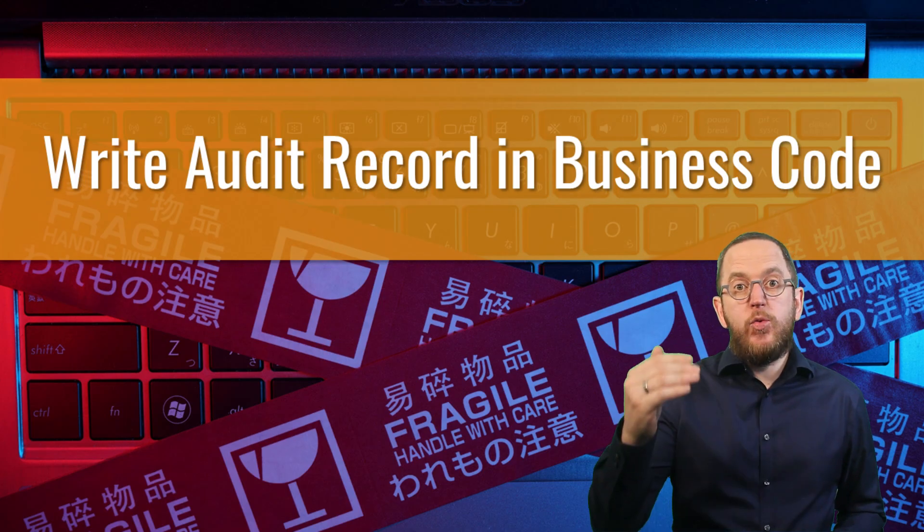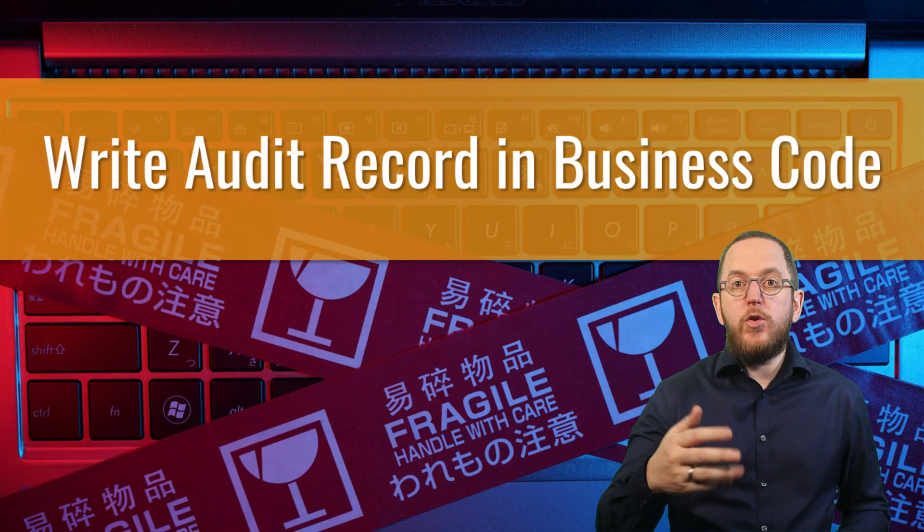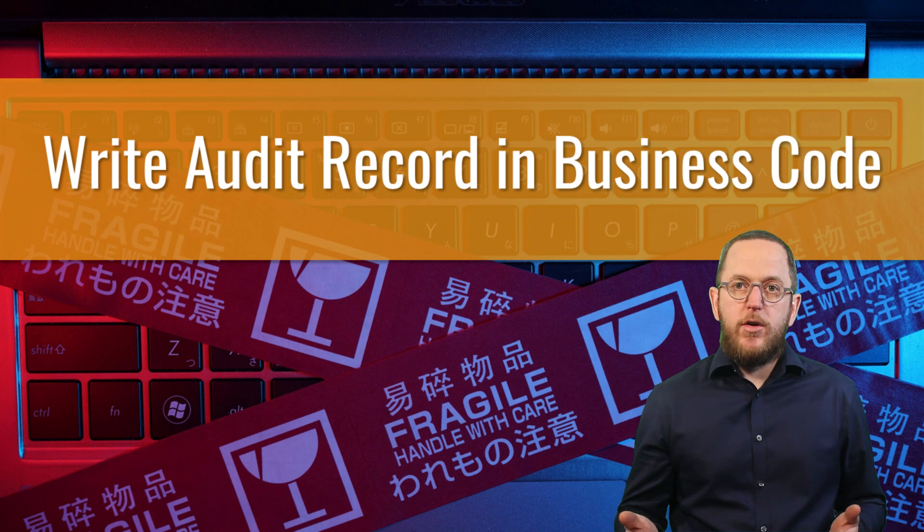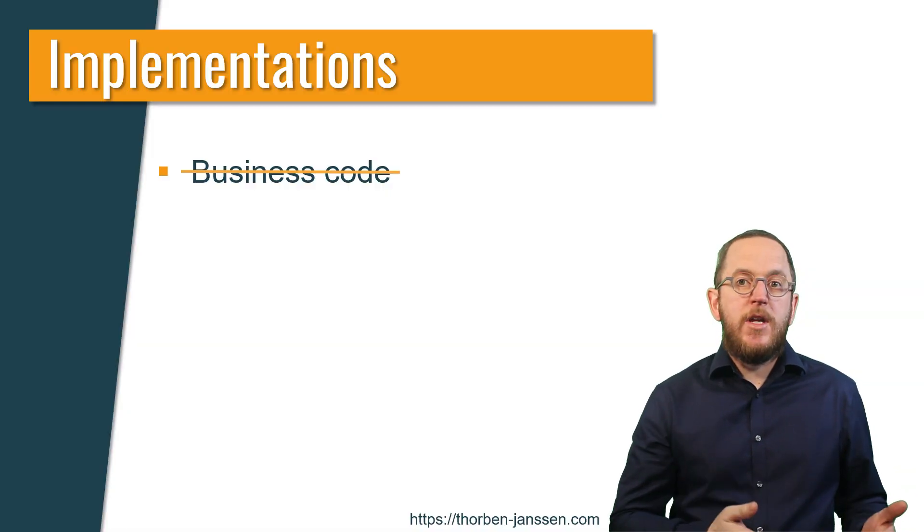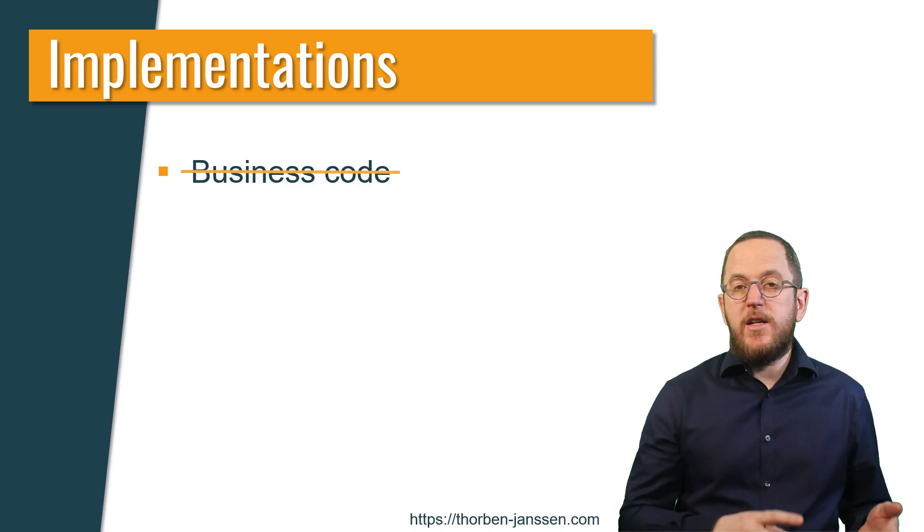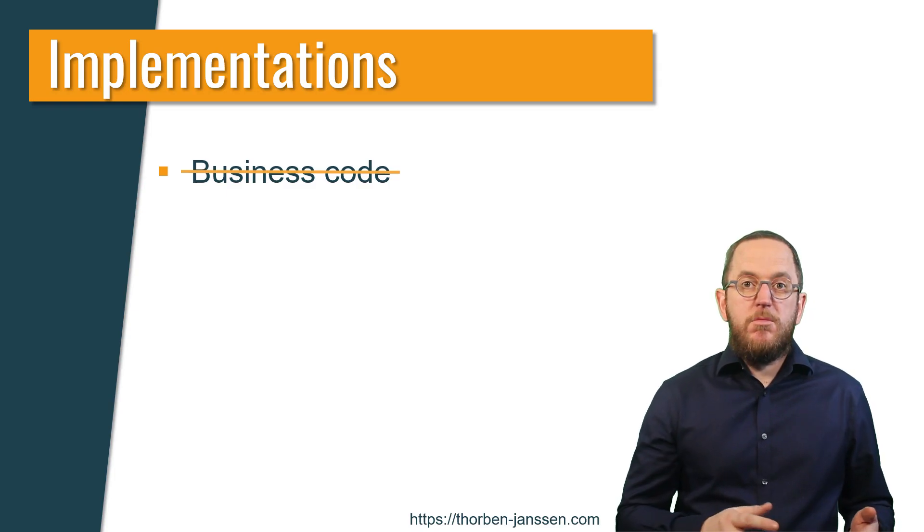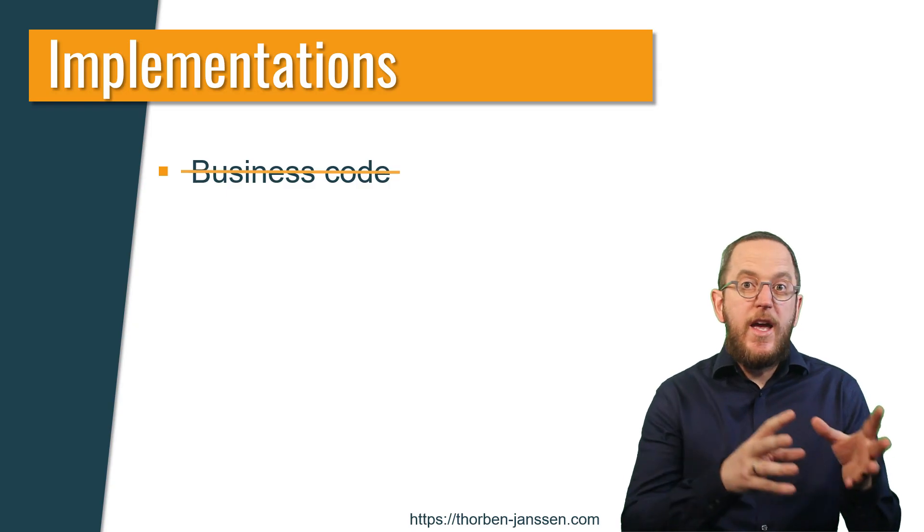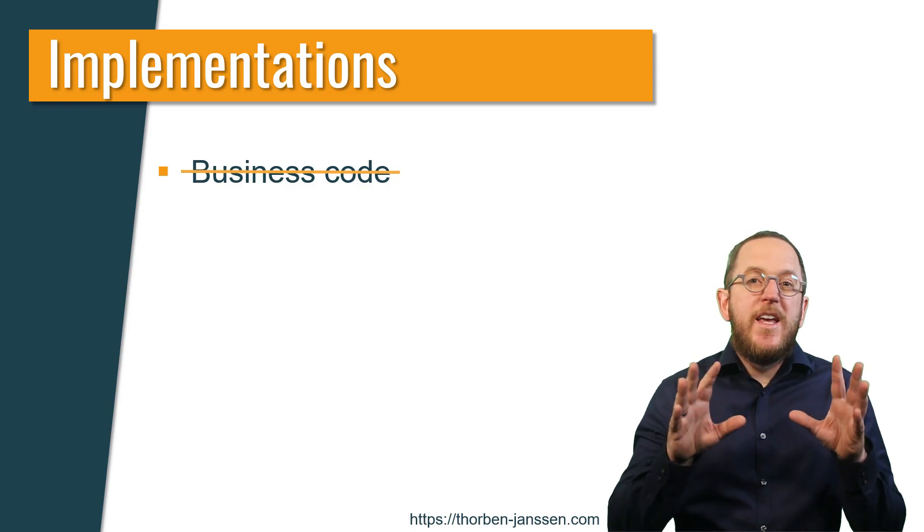It introduces a high risk of missing a few places in your code where you would need to write the audit log. And if you're using Hibernate or any other object-relational mapping framework, this gets even worse because the framework handles the update statements. So you're no longer in control, and matching the audit records with the actual update operations gets even harder.